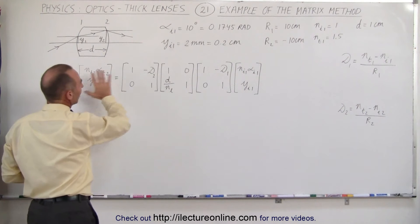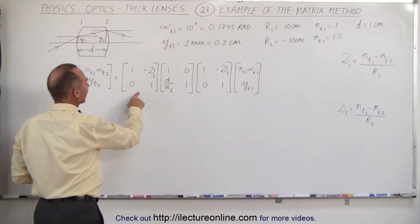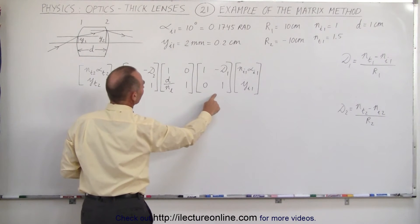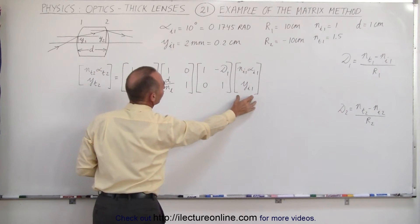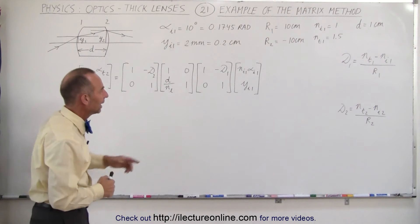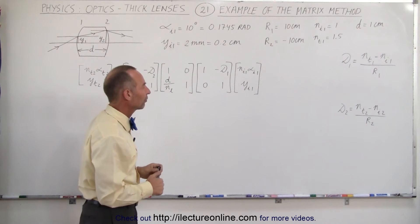Here is the matrix format that we came up with in the previous video. This is the refracting matrix for the second boundary, the refracting matrix for the first boundary, the transition matrix, and the information goes in here about the initial conditions of the ray, the initial direction and the initial height above the optical axis as it crosses the first boundary.